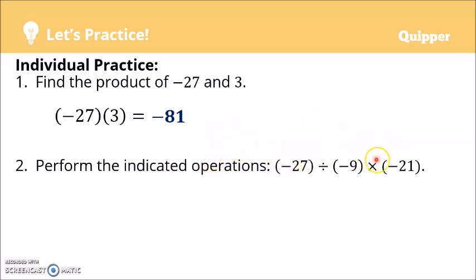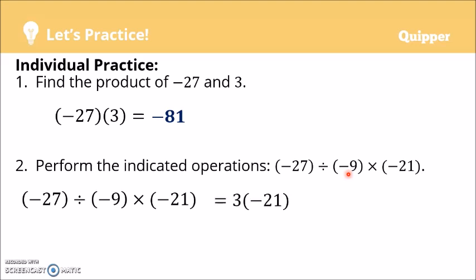I want you to try number 2 in your notebook. You may pause this video and then check the answer in a moment. Alright, let's check your answer. Negative 27 divided by negative 9, times negative 2 — perform from left to right. First, negative 27 divided by negative 9: same signs, so the answer is positive. 27 divided by 9 is 3, so that's positive 3. Then, positive 3 times negative 2: different signs, so the answer is negative. 3 times 2 is 6, so the answer is negative 6.